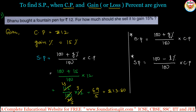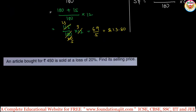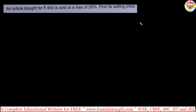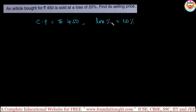Now let us see an example for loss. An article bought for rupees 450, so the cost price is rupees 450. It is sold at a loss of 20 percent, so loss percentage is 20. We need to find its selling price. Since it is a loss, we use the formula with 100 minus.